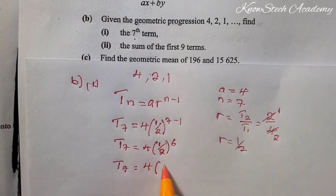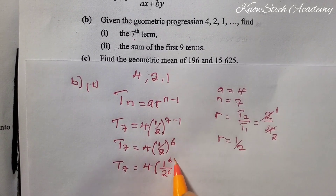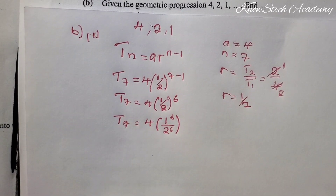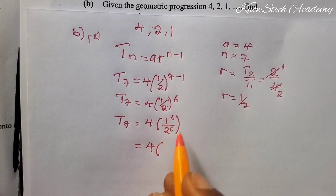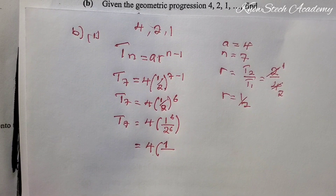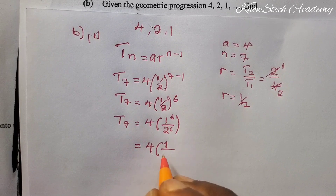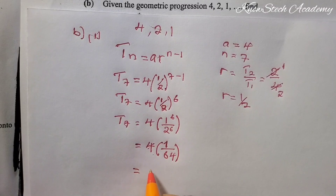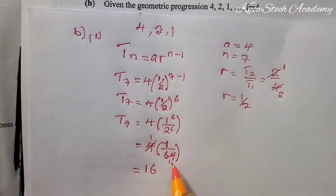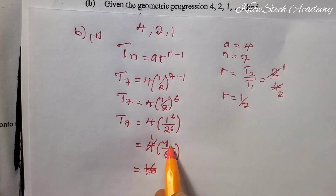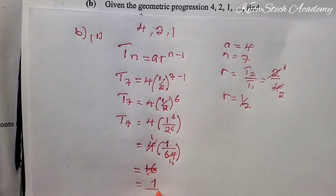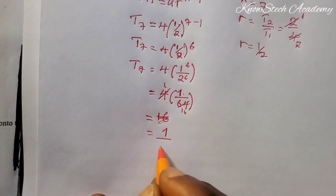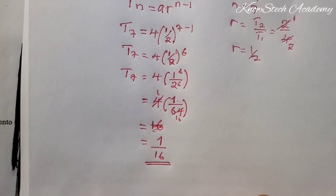So t7 equals 4 times (1⁶ / 2⁶). Now, 1 raised to any power is just 1. What is 2 to the power 6? 2 to the power 6 is 64. So we have 4 times (1/64). 4 into 4 is 1 and 4 into 64 is 16. So we remain with 1 over 16. Term number 7 is 1/16 — that's the answer.